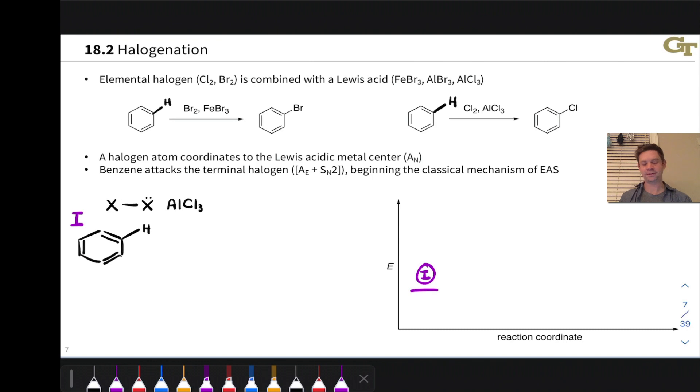Now what happens here overall in the reaction is a hydrogen linked to the aromatic ring is replaced with the halogen atom, either Br or Cl. And the key byproduct of the reaction is a hydrohalic acid, HBr in the left-hand case and HCl in the right-hand case.